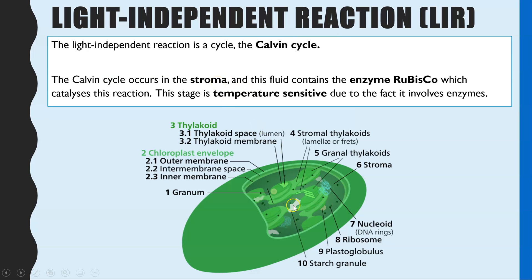This stage still occurs in the chloroplast, and it occurs in the fluid center called the stroma. Within that stroma is the enzyme rubisco, which catalyzes one of the key stages in the Calvin cycle. Unlike the light dependent reaction, temperature does affect the rate of reaction of the Calvin cycle, because enzymes are temperature sensitive.